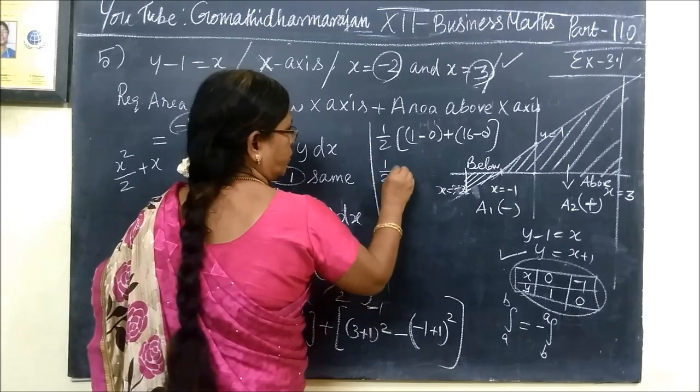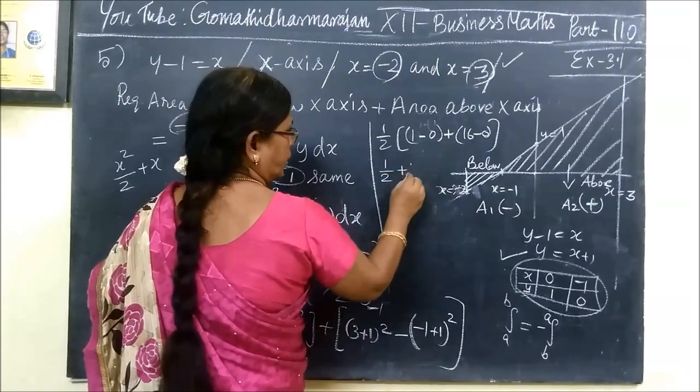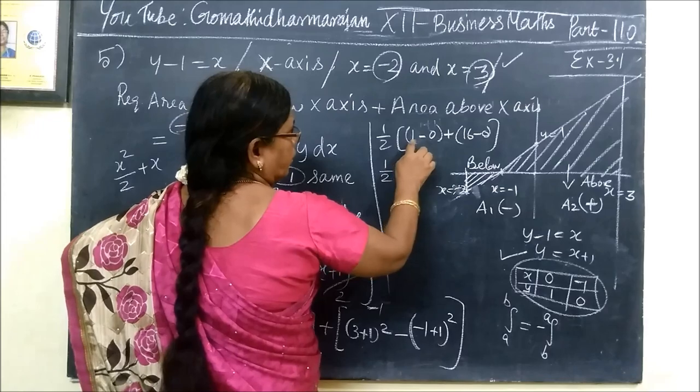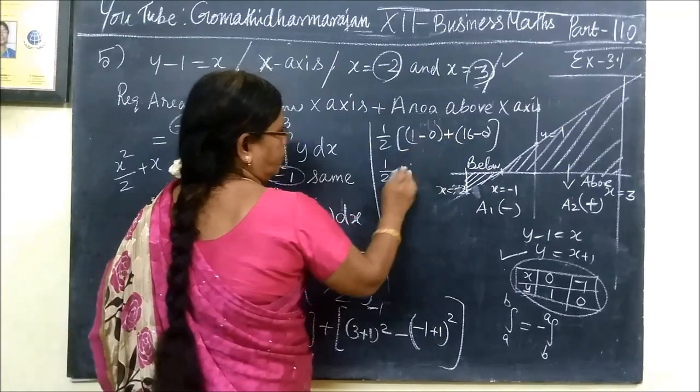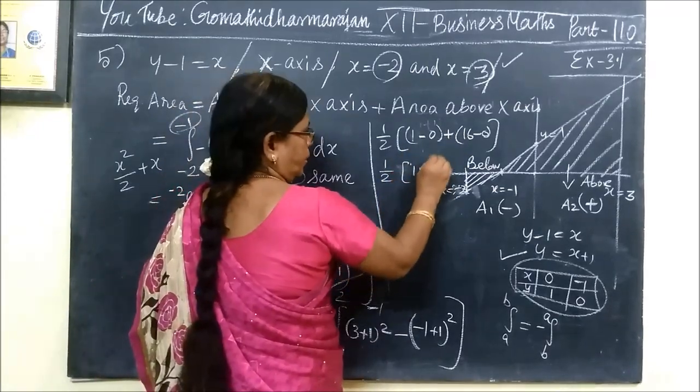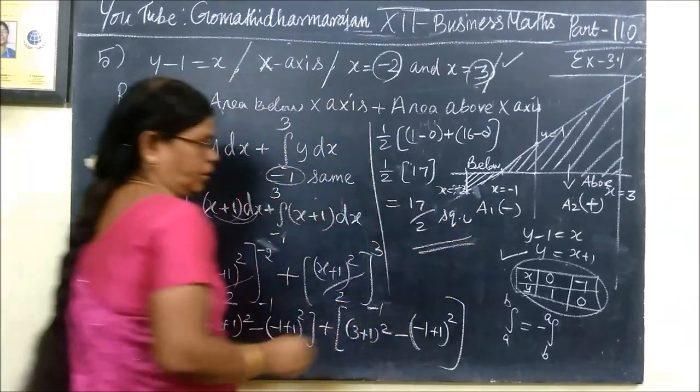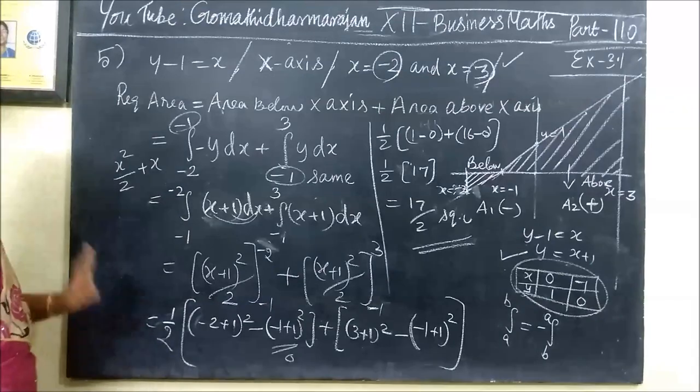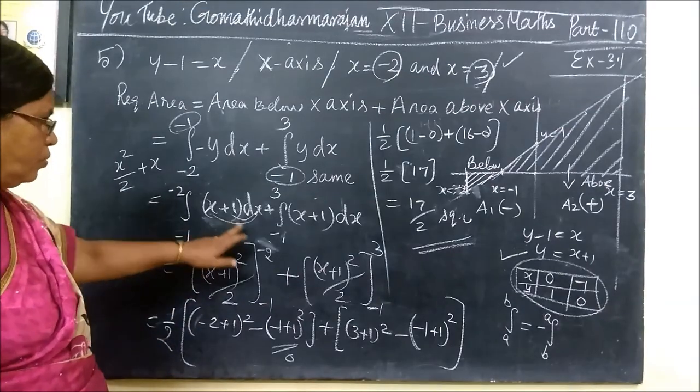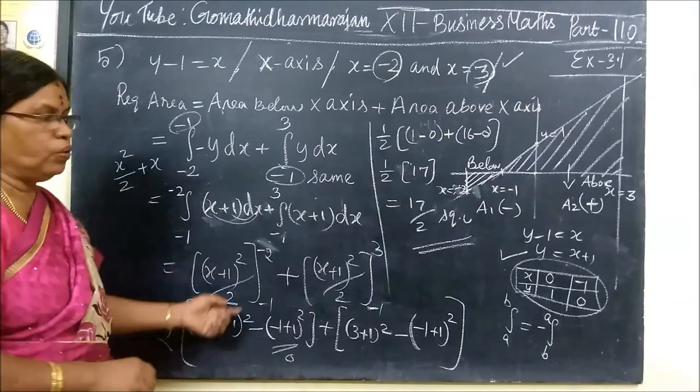So it equals 17 divided by 2. The answer is 17 by 2 square units.